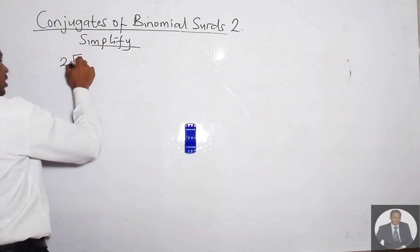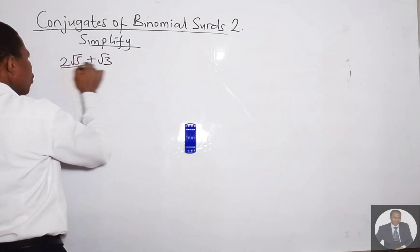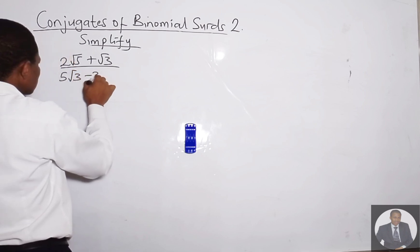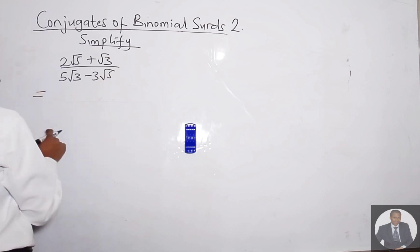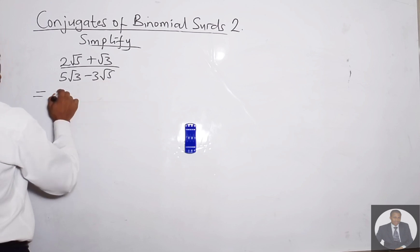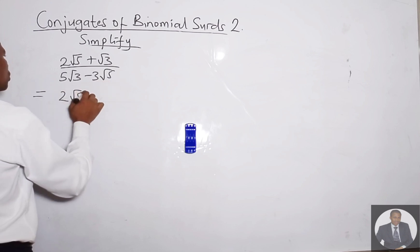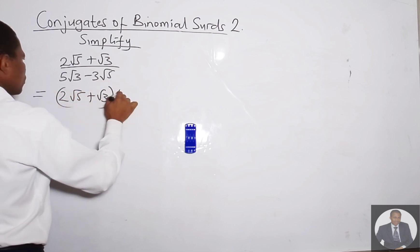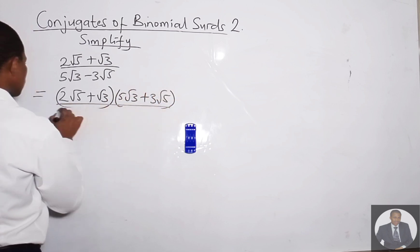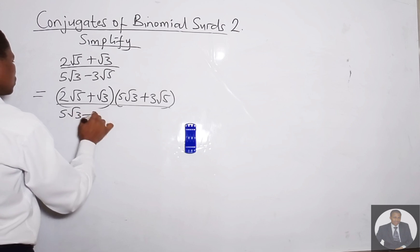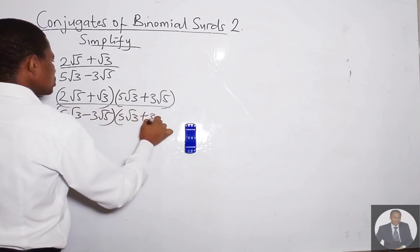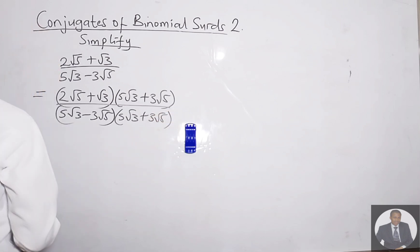Next example: simplify (2√5 + 5√3 + 3√5). The conjugate of the denominator (5√3 − 3√5) will be (5√3 + 3√5). So we multiply both the numerator and denominator by (5√3 + 3√5).